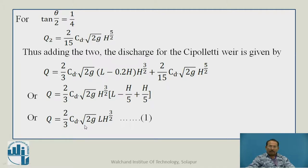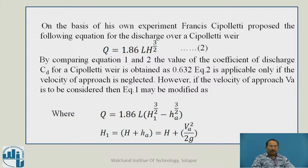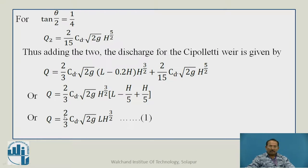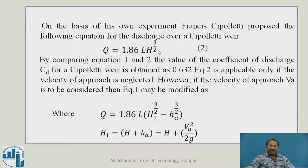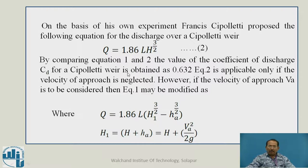This gives Q = (2/3) CD √(2G) L × 0.2 × H^(3/2), which is equation number 1. Putting the values of CD and other constants, we get Q = 1.86 L H^(3/2). By comparing equation 1 and equation 2, the value of the coefficient of discharge for a Cipolletti weir is obtained as 0.632. Equation 2, that is Q = 1.86 L H^(3/2), is applicable only if the velocity of approach is neglected.